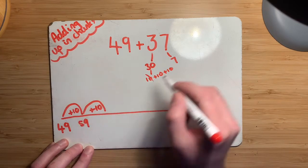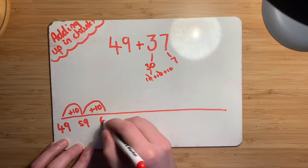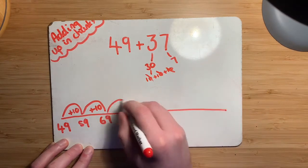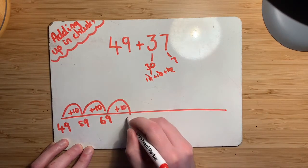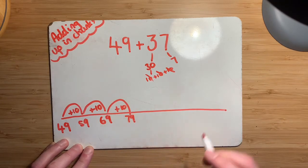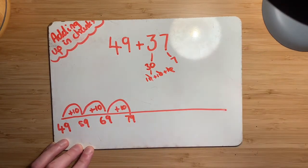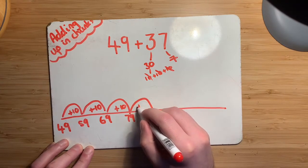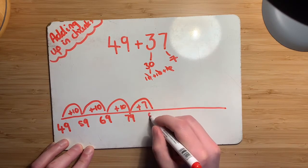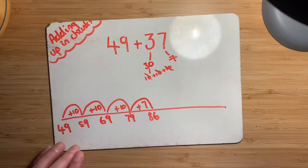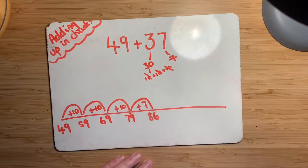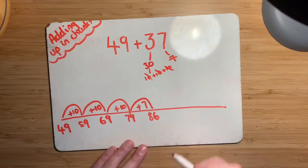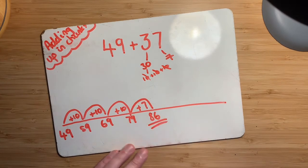Add another 10 on. Cross that one out because I've done it. That takes me up to 69. Add another 10 on, which would take me up to 79. And then finally all I've got left to add on is this last wee 7 here. So I'll cross that out because I'm just about to do that. So add on 7, which would take me up to 86. And so I've added all my chunks on from the 37. So 49 plus 37 must be 86.